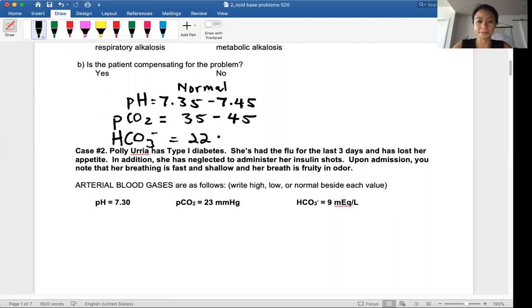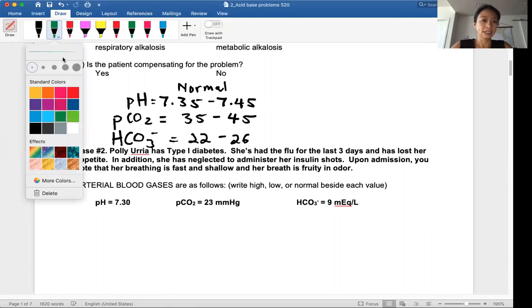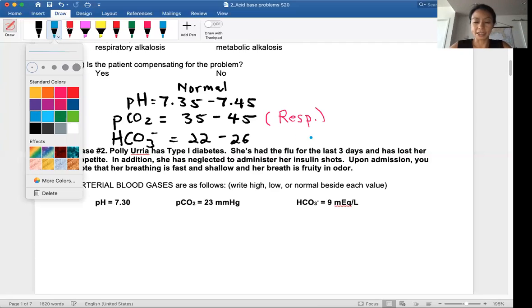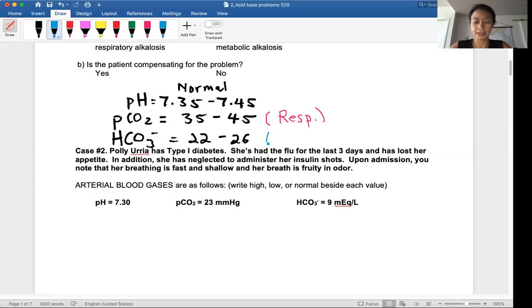If something strays from the balance and that is caused by the pCO2, then that will be a respiratory cause. If it's caused by the bicarbonate, then that is the actual cause of the imbalance, and that will be metabolic.